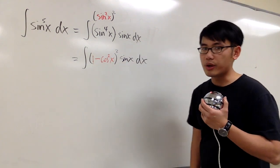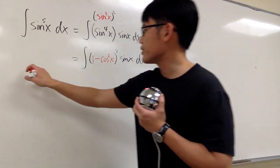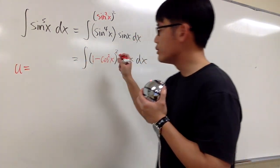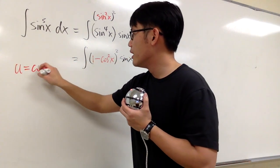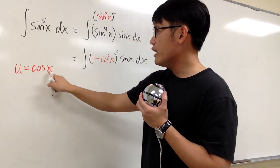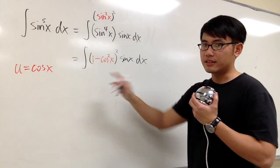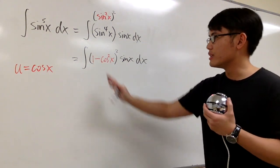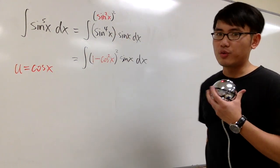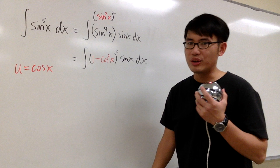And I claim this is easier to integrate, because we can use u substitution. That u equals to cosine x. And remember, the angle has to be the same. This is cosine x. The angle has to be the same. x and x have to be the same. That's why we cannot use the power reduction formula for that, because you end up with cosine 2x. That's bad.